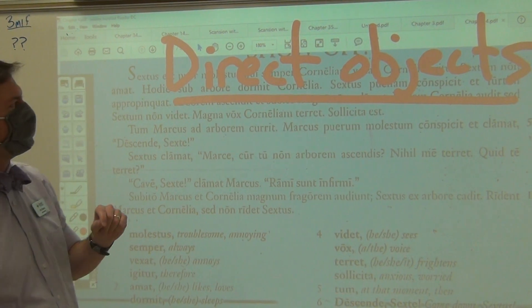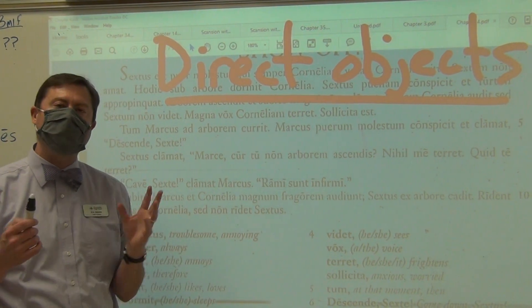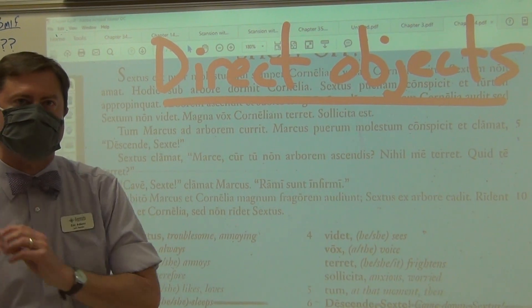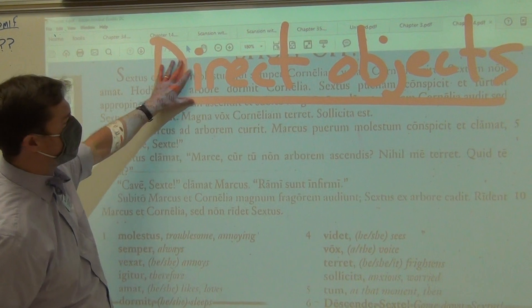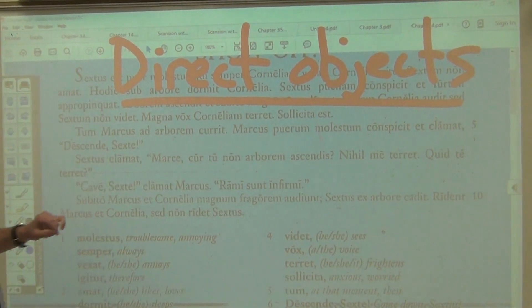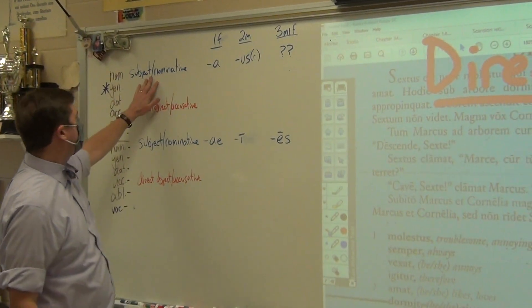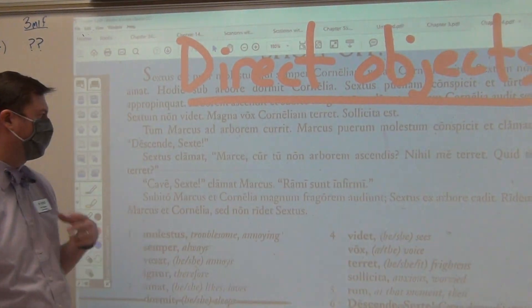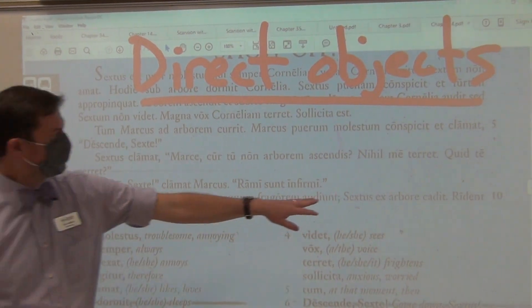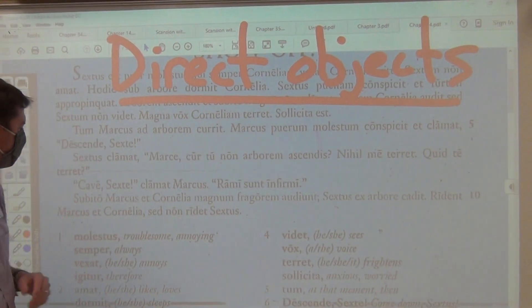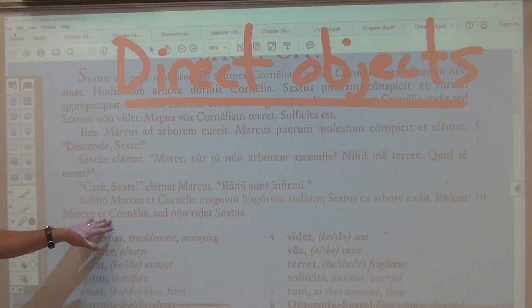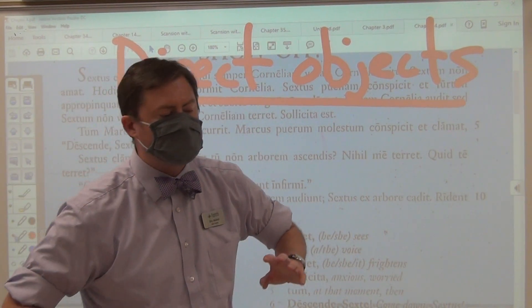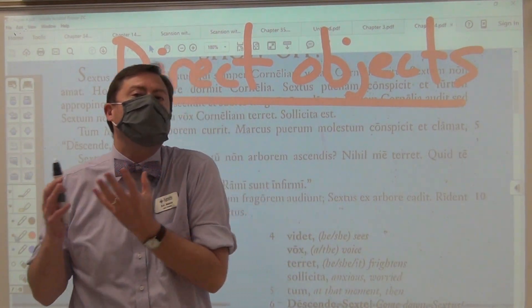In this video we're going to be translating and going over chapter four. At this point we are being introduced to a new kind of function for a noun in a sentence, and that is a direct object. So far we have talked about subjects — subjects are the doer of the verbs. Marcus shouts, he does the shouting. Sextus falls, he does the falling. Marcus and Cornelia laugh, they do the laughing. But the direct object is the receiver of the action, not the doer.